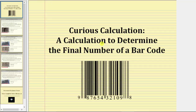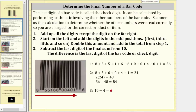Welcome to a video that will show a calculation to determine the final number of a barcode, which for the barcode below would be the rightmost digit, which in this case is this eight. The last digit of a barcode is called the check digit. It can be calculated by performing arithmetic involving the other numbers of the barcode. Scanners use this calculation to determine whether the other numbers were read correctly so that you are charged for the correct product or item.